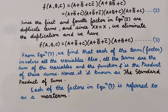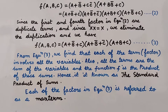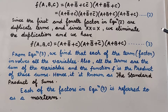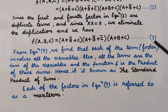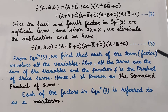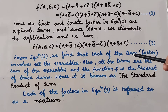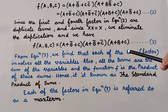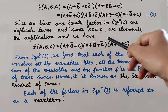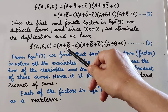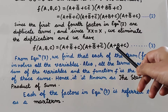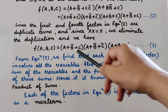When a logical function has been expressed in the standard product of sums form, each individual factor is referred to as a maxterm. From equation 3, the first maxterm is (a + b' + c), the second maxterm is (a + b' + c'), and the third maxterm is (a + b + c). So this function has three maxterms.